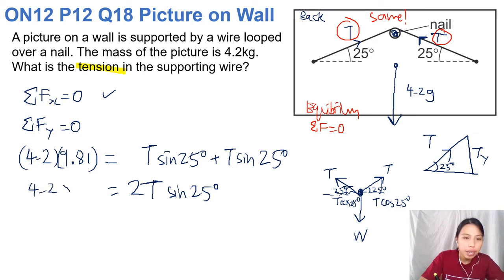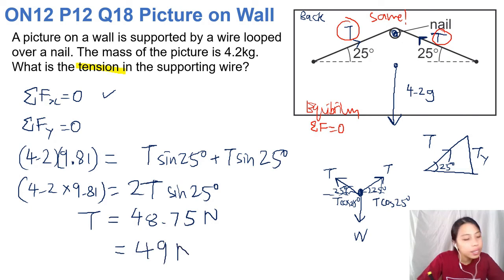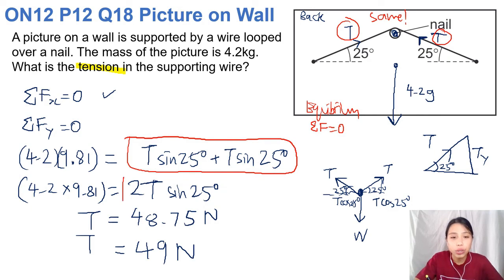So on the left side, 4.2 times 9.81. What do we get for T? Grab a calculator. Divided by 2, divided by sine 25. You should get about 48.75 newton. Round off to 2 sig figs will be about 49 newtons. So that is the answer for questions like this. The key thing to remember is, if there are stuff hanging on the wall, there's actually two tension forces. One on the right side, one on the left side. That's where these two come from. Remember components, tension, and things like that.